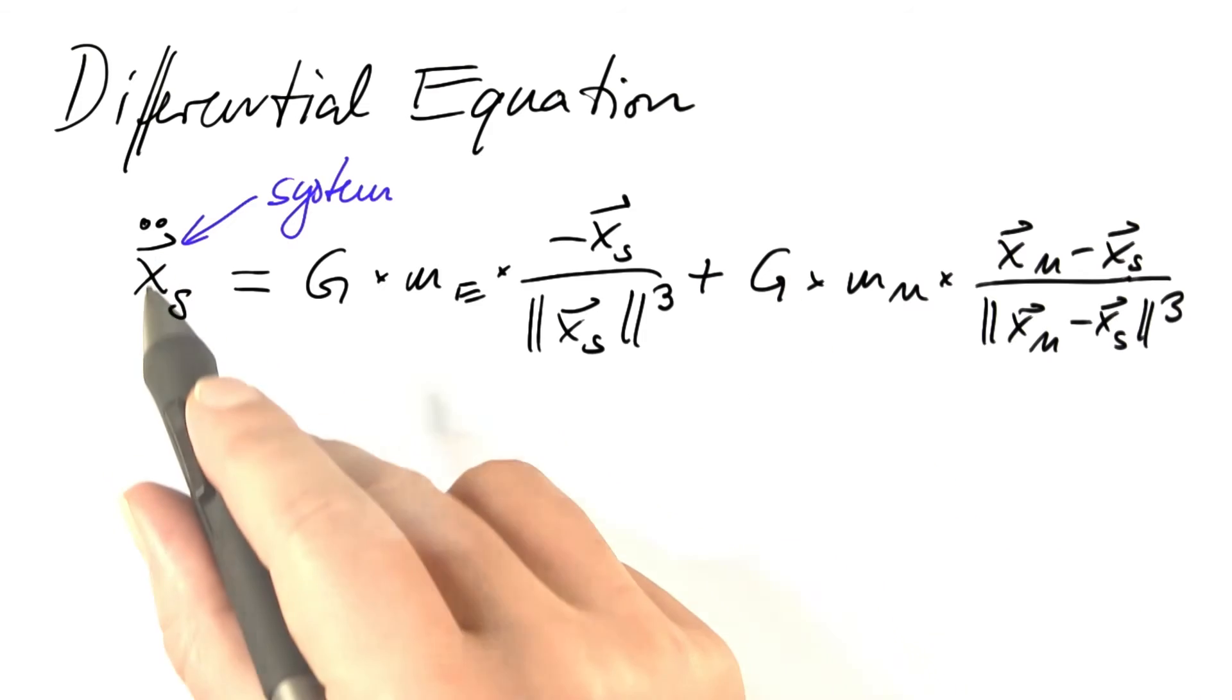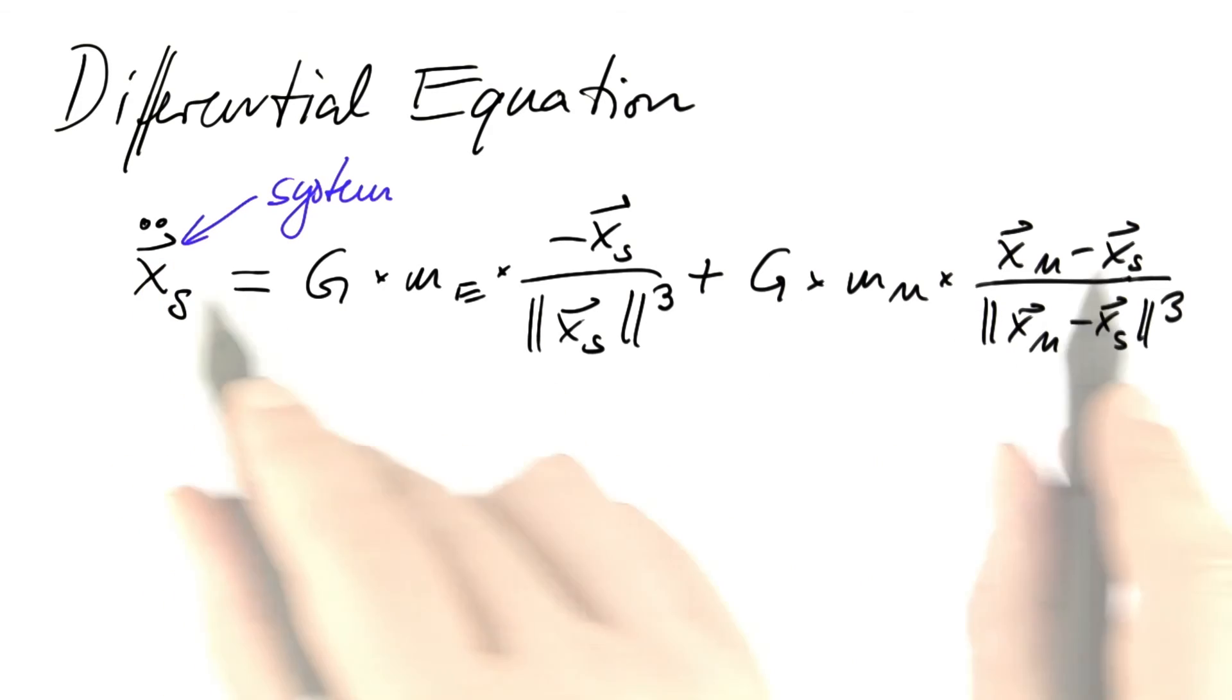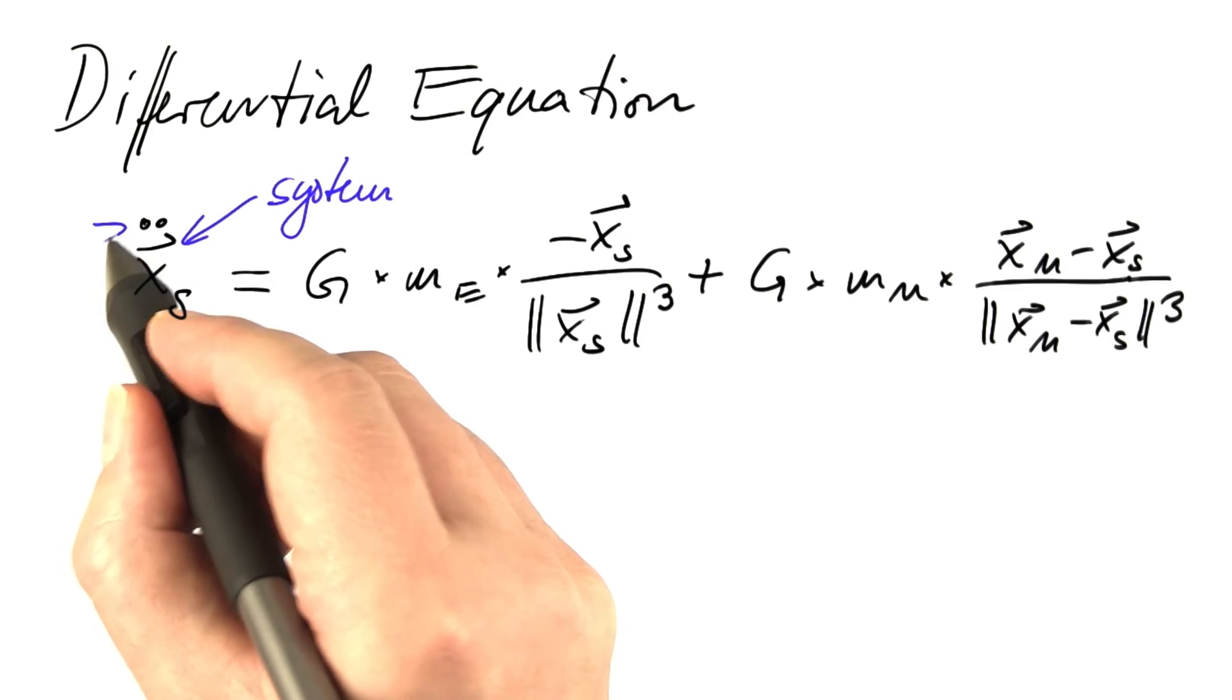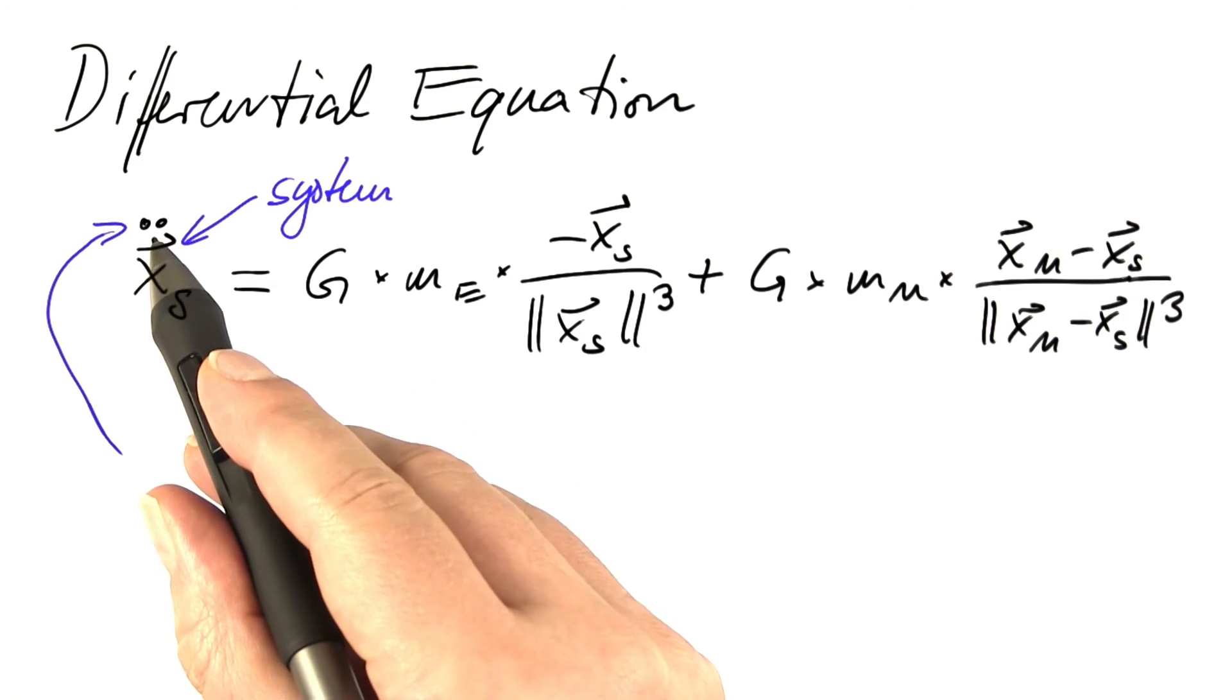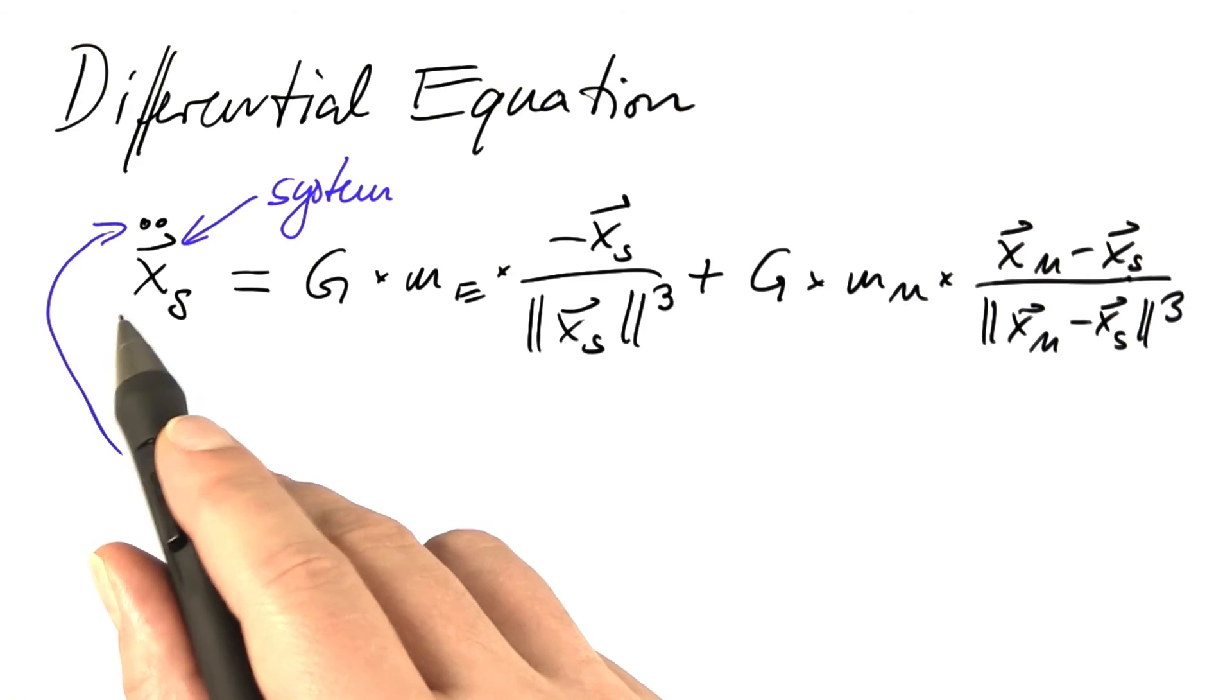It's not a single equation. We've got two components in here. Each of these two components has to fulfill this equation. The highest derivative that occurs is the second one, which is why we call this differential equation a differential equation of order 2.